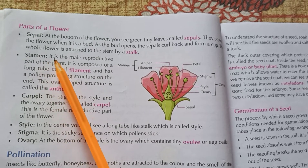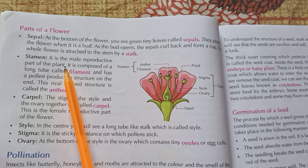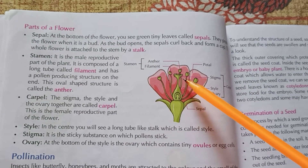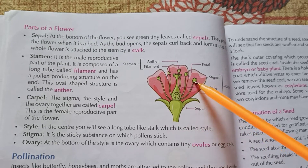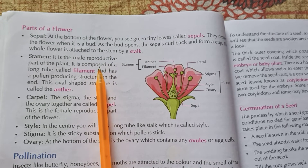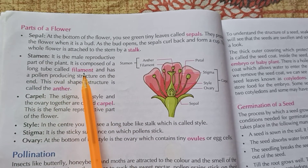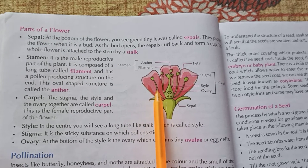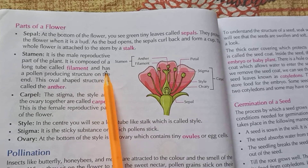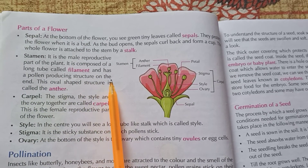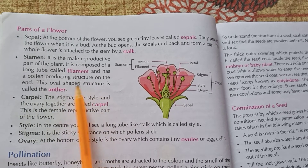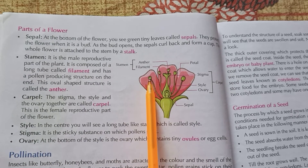Now, stamen — it is the male reproductive part of the plant. It is composed of a long tube called the filament. And it has a pollen-producing structure on the end.